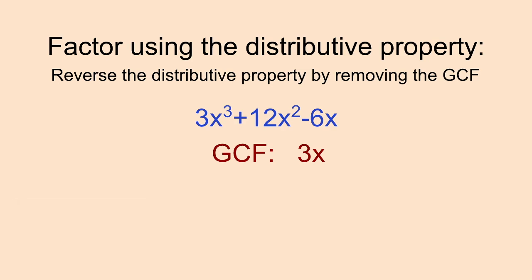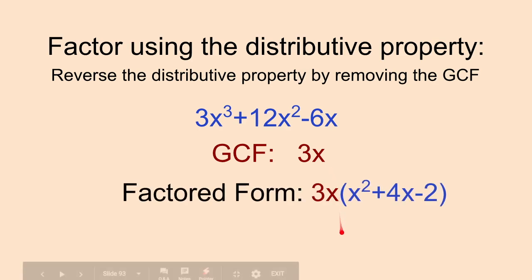And here is our answer. The factored form would be 3x(x² + 4x - 2). So we would need this entire thing, and that would be our factored form when we factor using the distributive property. So to check, we could go backwards and say, 3x times x² would give us the 3x³. Now 3x times 4x would give us this 12x². And 3x times negative 2 would give us our negative 6x right here.